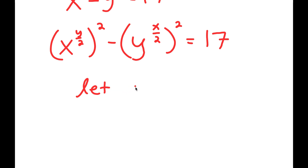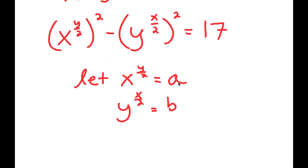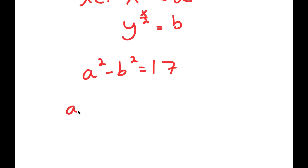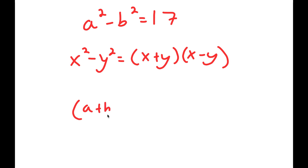Now I'm going to let x to the power of y over 2 equal the variable a, and y to the power of x over 2 equal the variable b. Substituting in a and b, I get a squared minus b squared is equal to 17. Using the difference of squares identity — x squared minus y squared equals x plus y times x minus y — I can factor this as a plus b times a minus b equals 17.